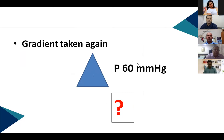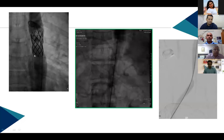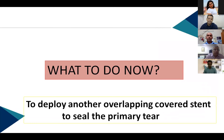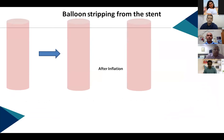However, surprisingly, the gradient increased from 30 to 60 mmHg after stenting. Review of angiograms revealed a dissection starting from the distal end of the first stent, spiraling throughout the abdominal aorta, with acute occlusion of the left common iliac artery. An overlapping covered stent was planned for the primary entry tear. During delivery of the second stent, the balloon became stripped from the stent — a potentially catastrophic situation requiring careful management.